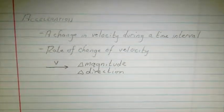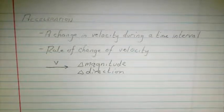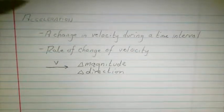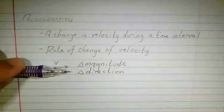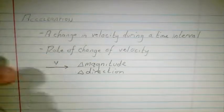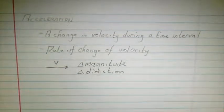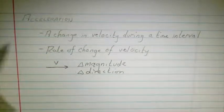If I'm going 30 miles an hour and I turn and stay at 30 miles an hour, I've accelerated because I've changed the direction. That's a little trickier. There's a thing called centripetal acceleration that helps you deal with the change in direction of the vector, but we're not going to talk about that a great deal in this one.